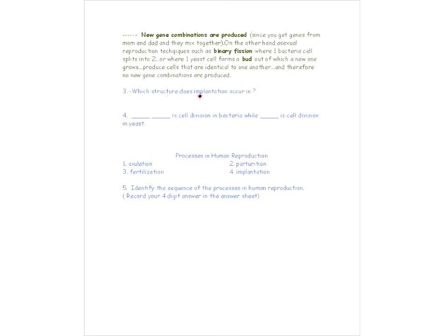The next question is: which structure does implantation occur in? Implantation occurs in the uterus, and the specific part of the uterus is the lining, which is called the endometrium.